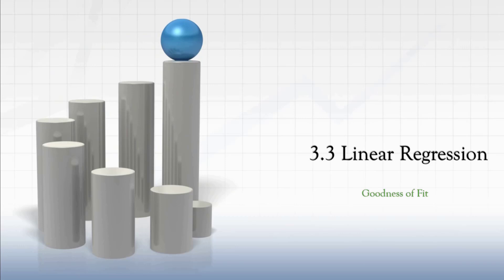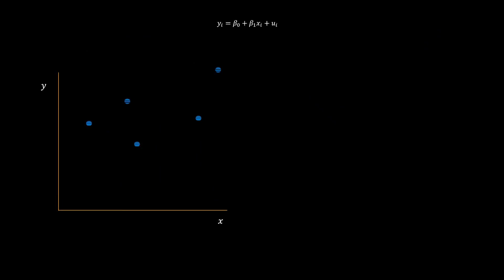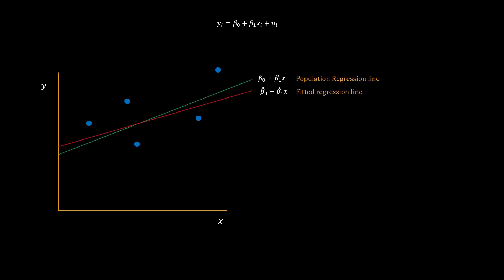In the last video we did a deep dive on statistical properties of the OLS estimator. In this video we are going to talk about how good is the overall model. So let's say we have these five sample data points, and there is a population regression line and a fitted regression line estimated by OLS. How do we measure the performance of the fit, or the goodness of the fit? By performance, we want to measure how much variation within Y can be explained by X.